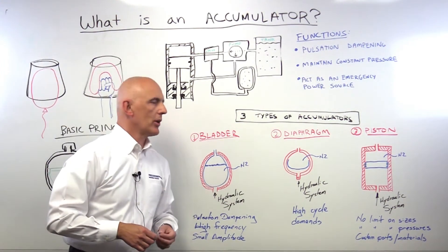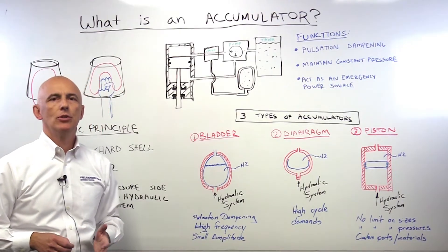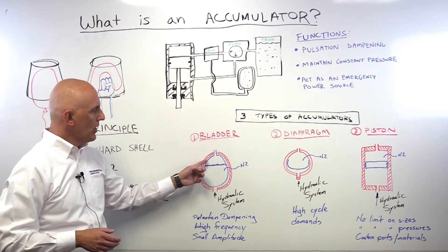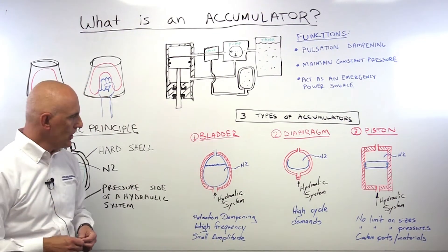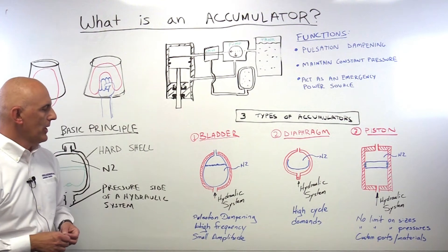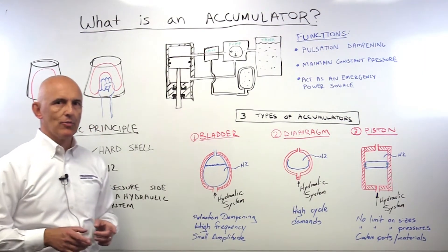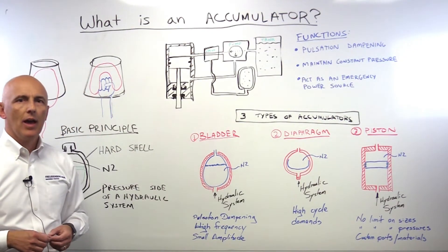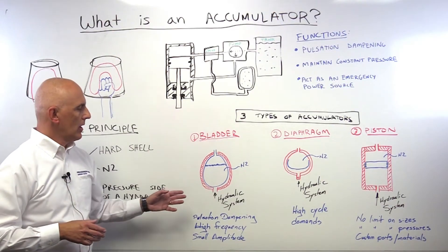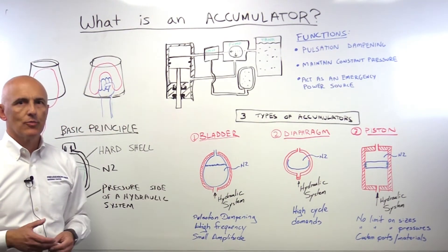Here we come to the three different types of accumulators: the bladder, diaphragm, and piston type. Bladder is the bread and butter — you can use bladder accumulators everywhere, and most hydraulic systems use them. Basically, you have a bladder bag with a pre-charge of nitrogen connected to the hydraulic system. These accumulators are used in pulsation dampening, especially where you have high frequency and small amplitude. However, this type has a restriction: the bladder has a vulcanization seam, and this is the weak point. If you have high frequency in a high cycle demand, you can have a rupture in this seam.